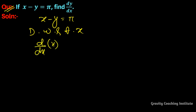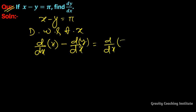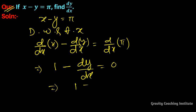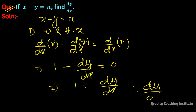Taking the derivative of x minus y equals pi: the derivative of pi is 0, so 1 minus dy/dx equals 0, which gives dy/dx equal to 1. Therefore dy/dx equals 1. Answer.